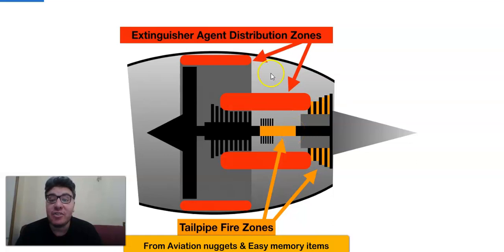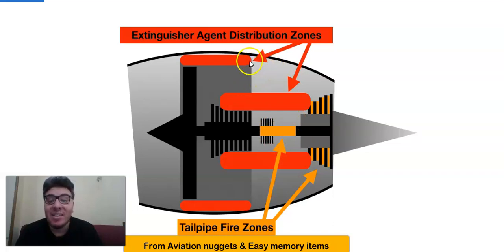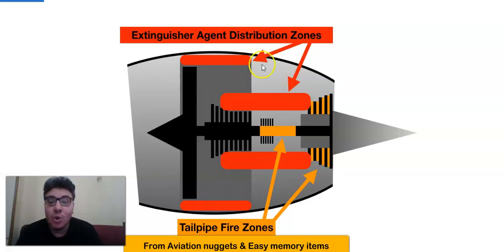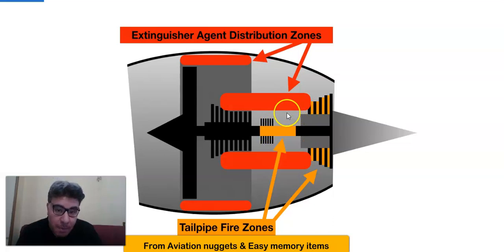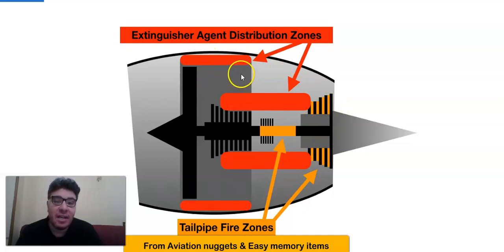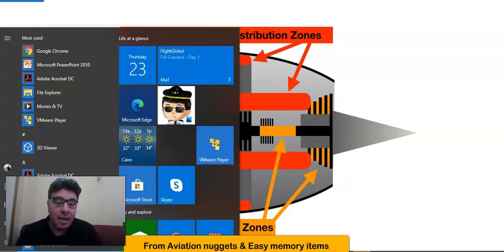The first difference between engine fire and tailpipe fire is location — they propagate in totally different areas. Keep in mind: the engine fire propagates in the nacelle where the fire detector loops are located. The tailpipe fire develops in the core of the engine, from the combustion chamber or from the aft turbine race. This schematic clearly identifies the extinction agent distribution zone and the tailpipe fire zone.